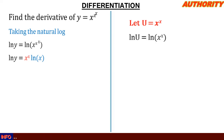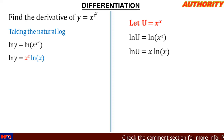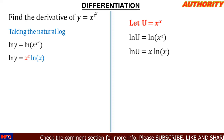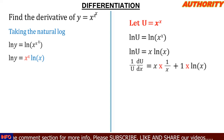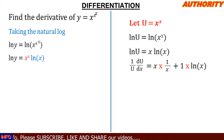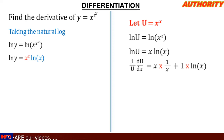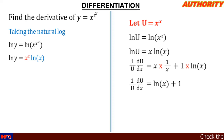Now we apply the product rule on the right hand side. The derivative of ln(u) with respect to x gives (1/u)·(du/dx). On the right hand side, the derivative of x·ln(x): the derivative of ln(x) is 1/x multiplied by x, plus the derivative of x which is 1 multiplied by ln(x). So x·(1/x) = 1, giving us (1/u)·(du/dx) = ln(x) + 1.